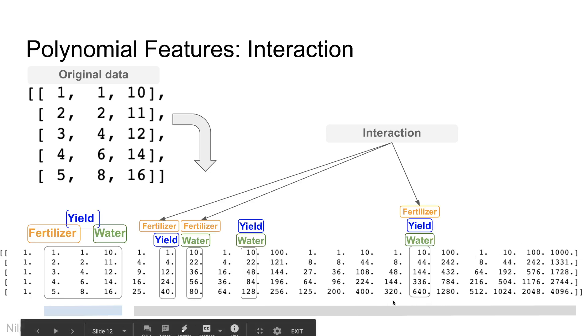The previous example was with degree two. Now this is with degree three and here we can see there are a lot more columns generated in the output. Here there is one additional interaction which was not there before, which is fertilizer, yield, and water all together.